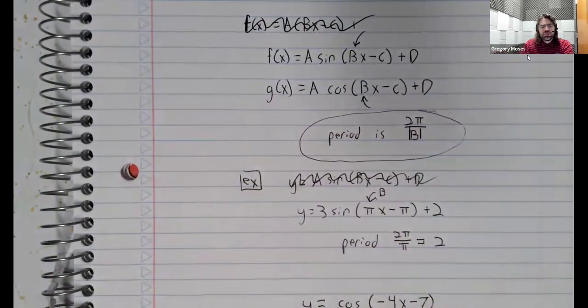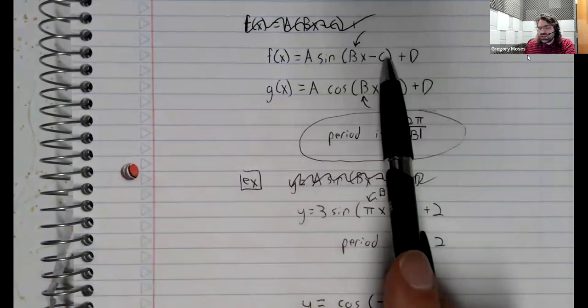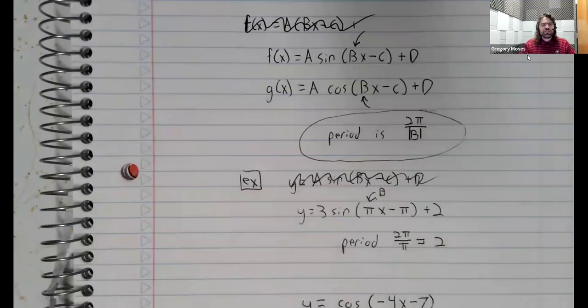And I've mentioned this, but in these sinusoidal functions, the a, b, c, and d do not interact. So changing a, changing c, changing d, none of that affects the period.